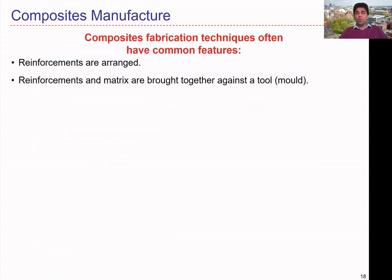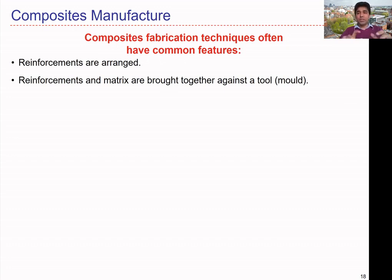Before discussing composite manufacturing, I'd like to highlight some fabrication techniques common to many processes. In most manufacturing processes, reinforcements are arranged, and we decide the volume fraction of reinforcements to be used. At the same time, we have to decide the geometry — whether it's long fiber, mats, or individual fibers — and how to align them in the axial direction or at some angles.